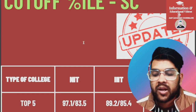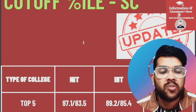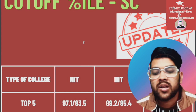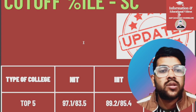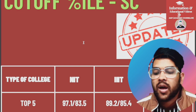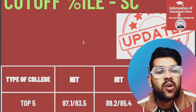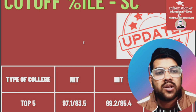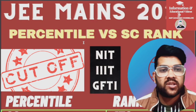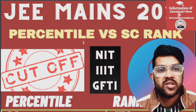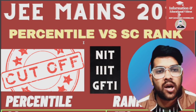For top 5 NITs, 97.1 percentile is required to get the CSE branch, and if you want to get into a top 5 NIT with any branch, then 83.5 percentile is needed. This is Amit, and you are on my channel for educational videos.